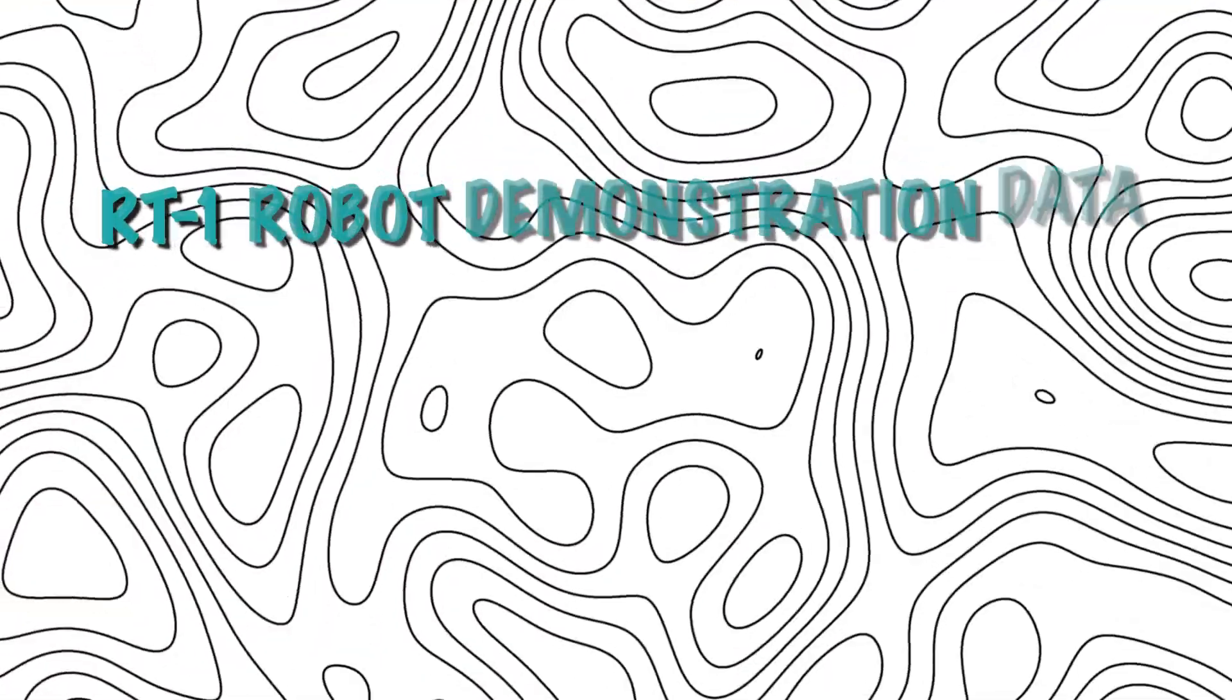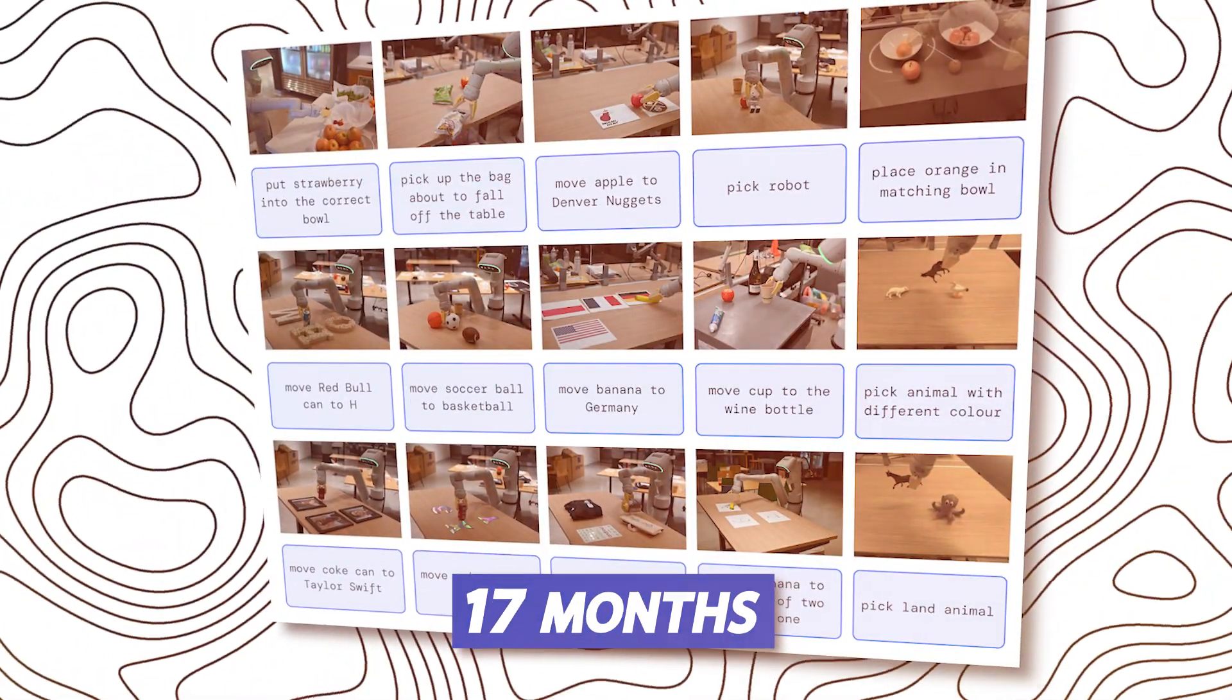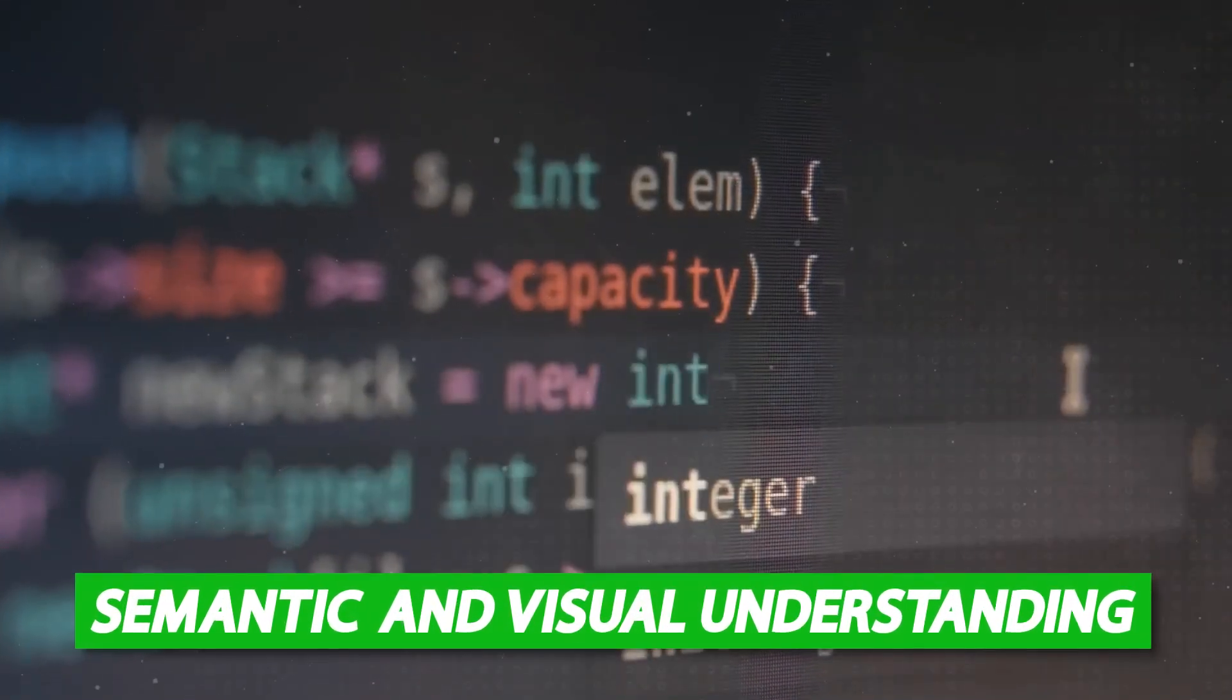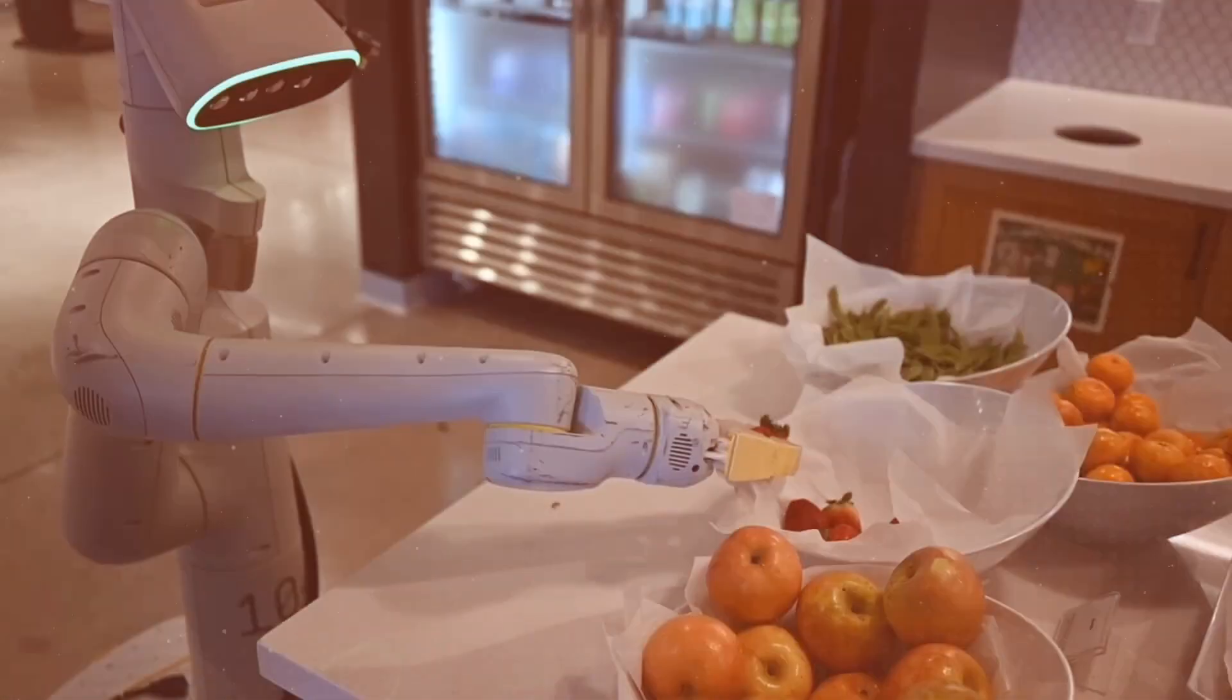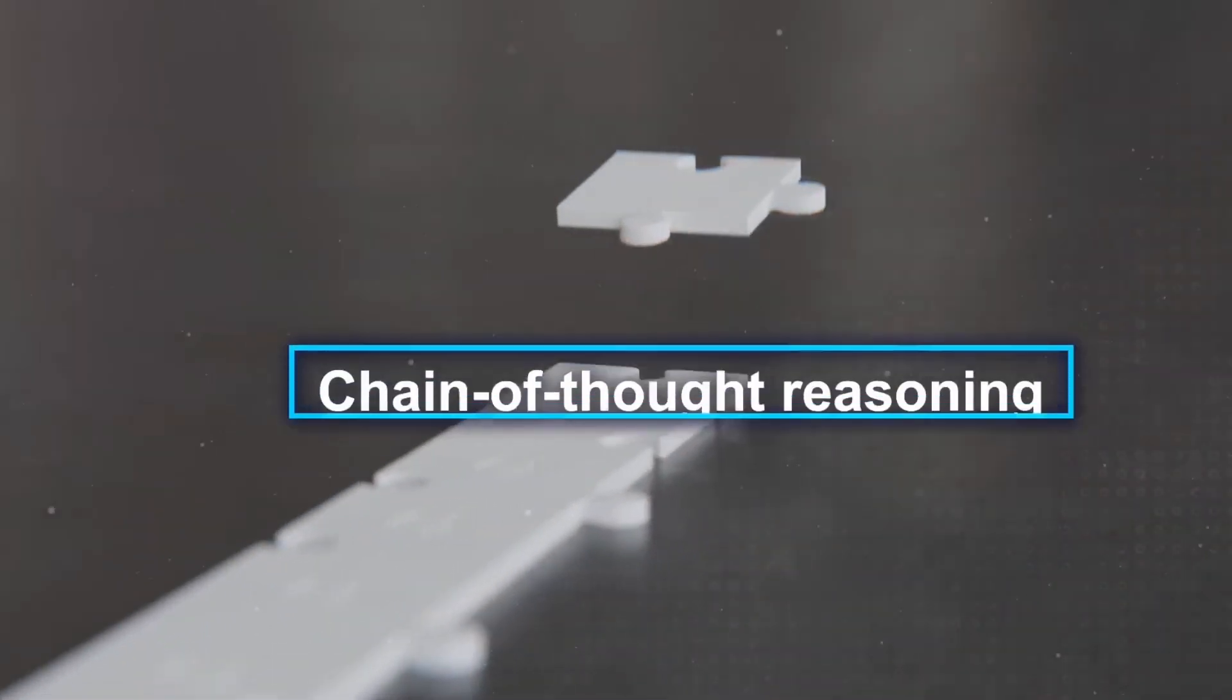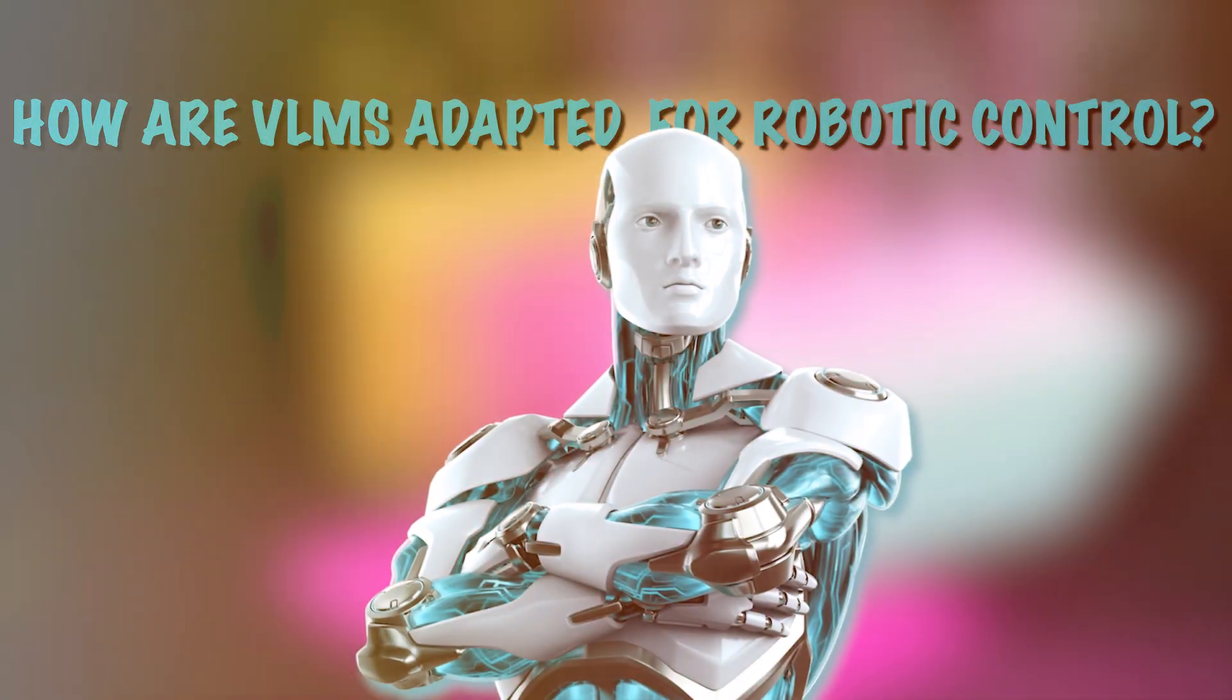More specifically, they used RT-1 robot demonstration data acquired for 17 months in an office-kitchen environment with 13 robots. RTX outperforms the robotic data it was exposed to in terms of generalization, semantic, and visual understanding. This includes processing new commands and responding to user commands through basic reasoning, such as thinking about item categories or high-level descriptions. Also known that adding chain-of-thought reasoning enables RTX to execute multi-stage semantic reasoning.